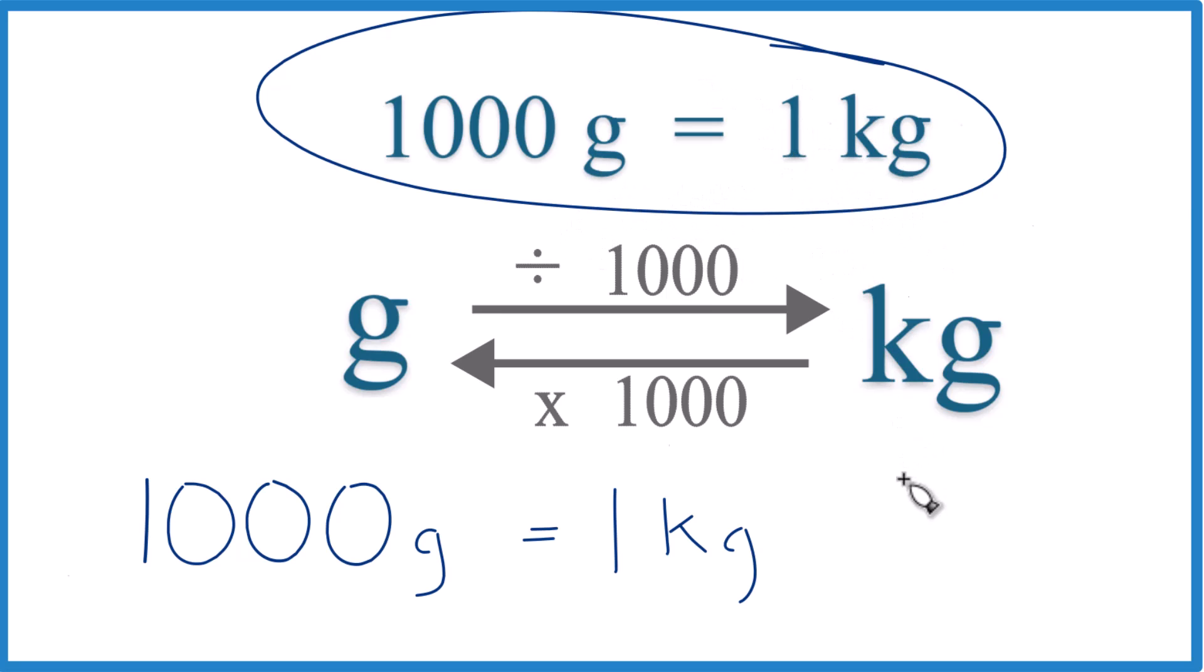For example, if you were given 500 grams, you would know that 500 is half of 1000, so you'd have one half a kilogram or 0.5 kilograms. So the key again is memorizing that a thousand grams is one kilogram.